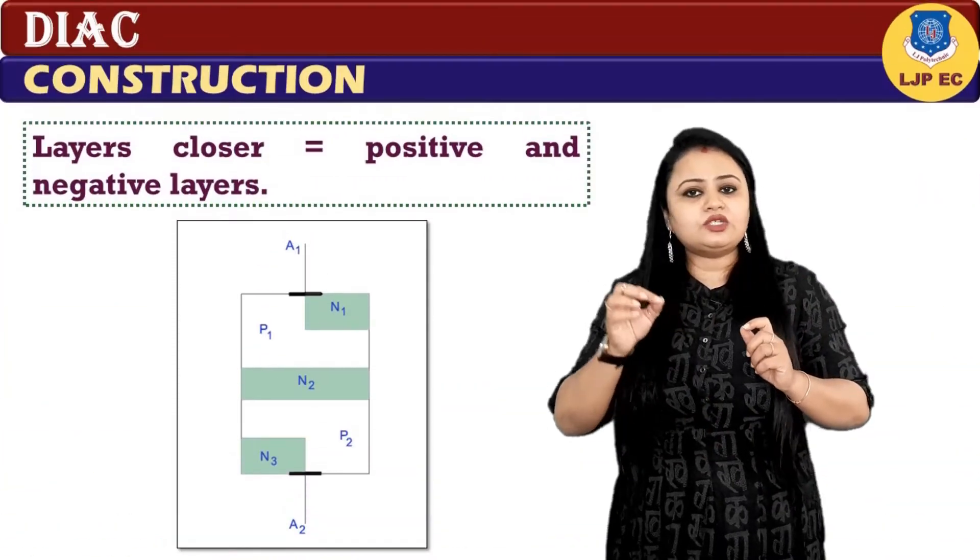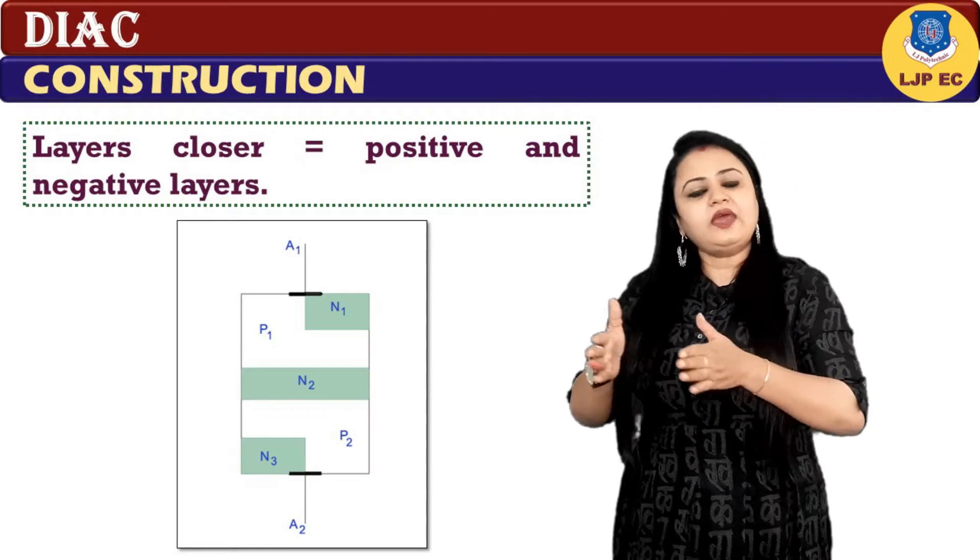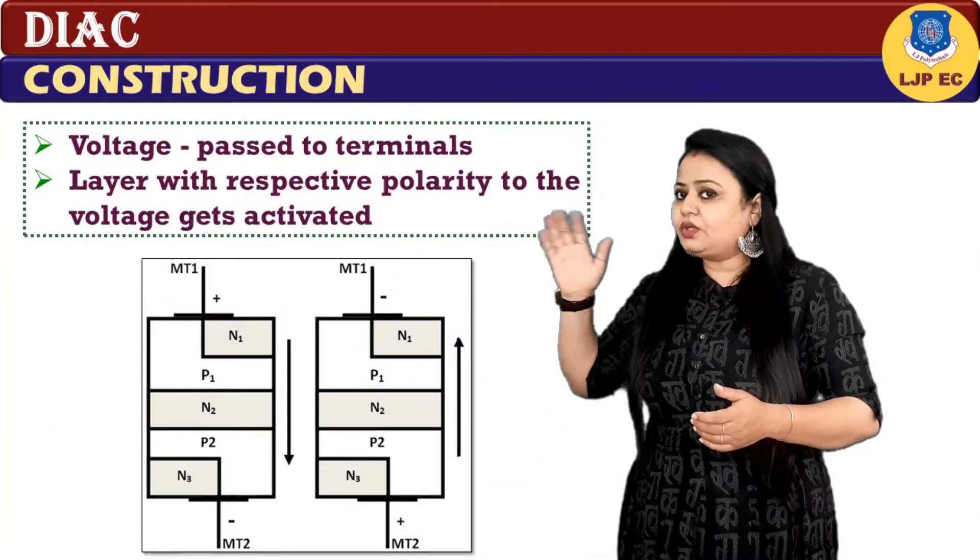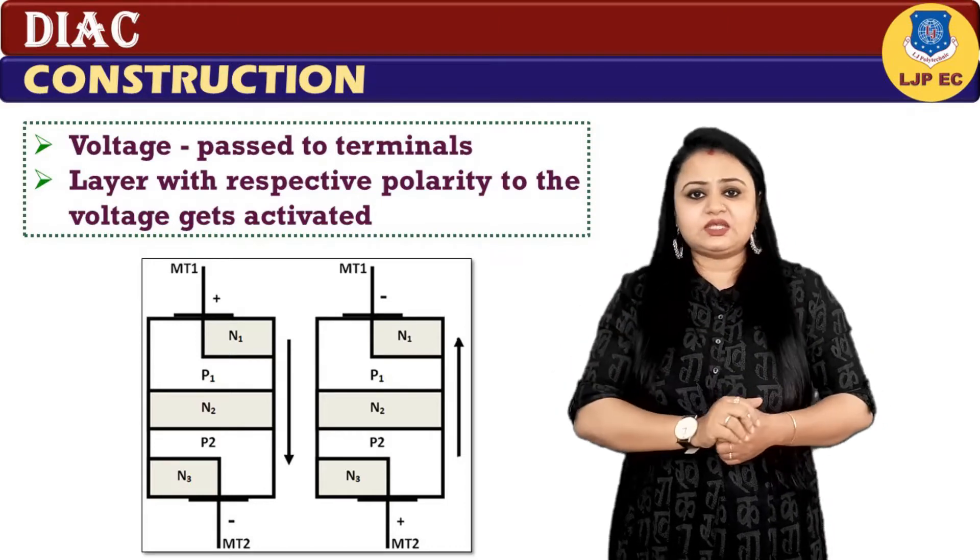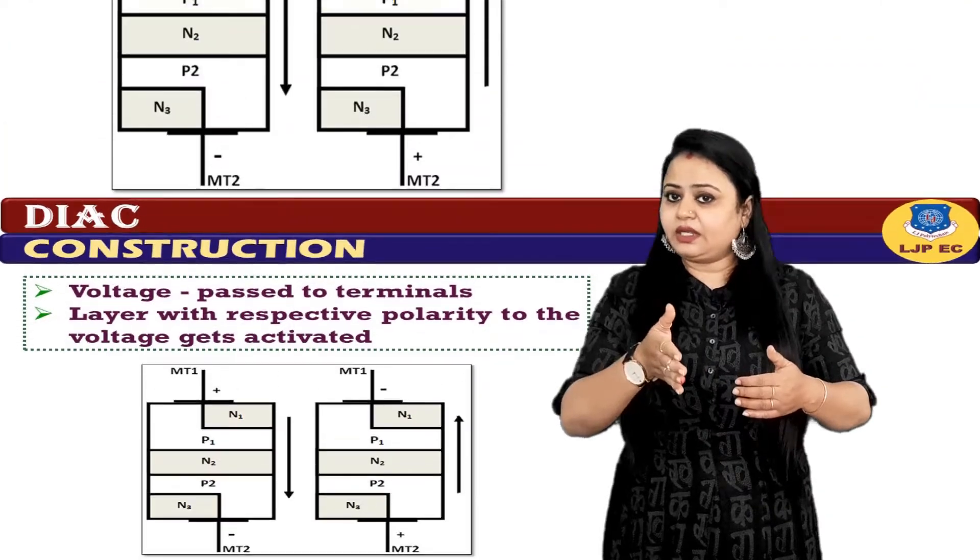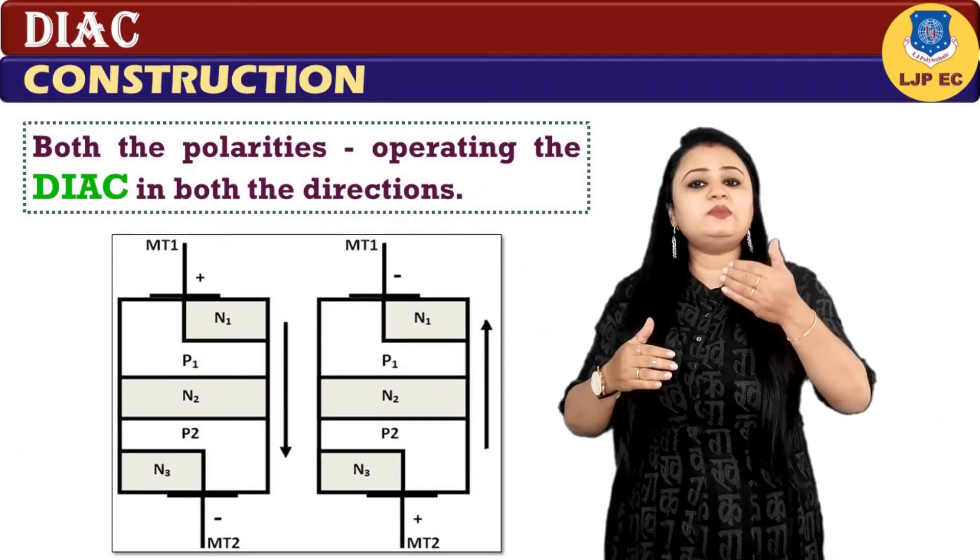The layers closer to the terminals are a combination of both positive and negative layers. When the voltage is passed through the terminals, the layer with respective polarity to the voltage gets activated. This combination of both polarities helps in operating DIAC in both directions.